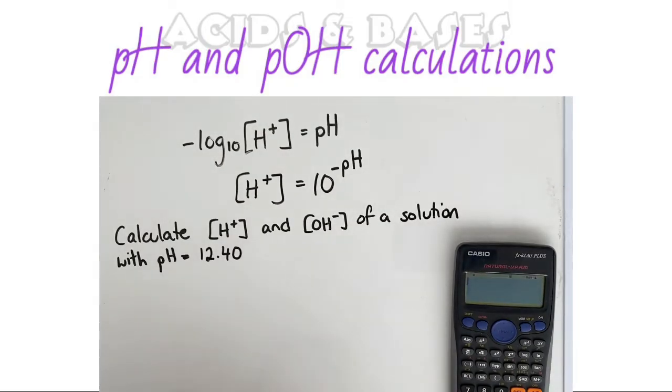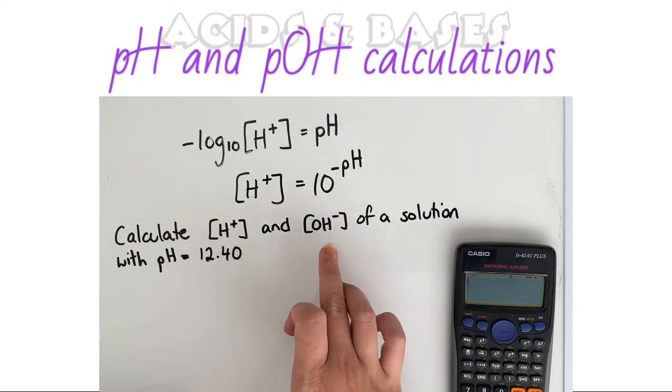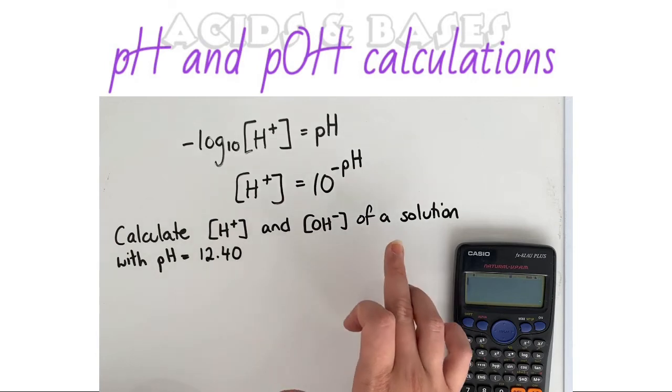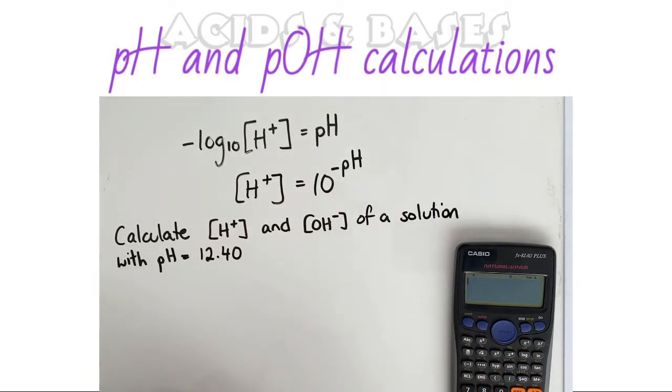So let's try this example. In this one we're asked to calculate the concentration of the hydrogen ions and the concentration of the OH or hydroxide ions in a solution that has a pH of 12.4. First off, let's do the concentration of the hydrogen ions.